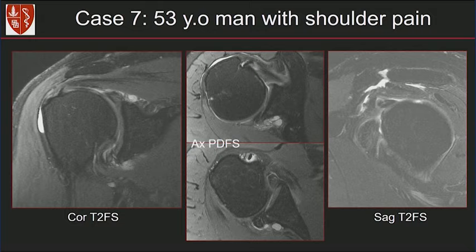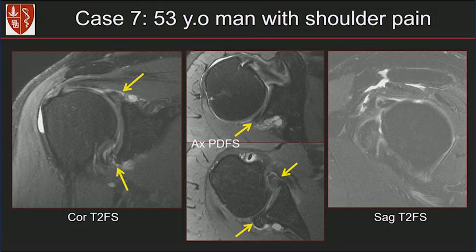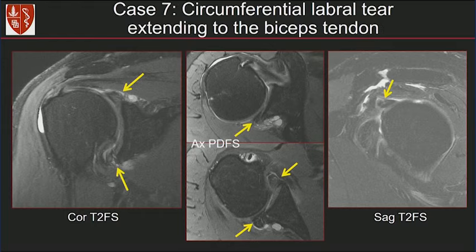This is a case of chronic shoulder pain. On the coronal T2 fat-suppressed image, we see abnormal signal in the superior and inferior labrum with paralabral cysts adjacent. The axial proton density fat-suppressed images show abnormal signal and morphology of the posterior and anterior labrum, with multiple paralabral cysts. The sagittal image shows extension of that abnormal signal into the biceps tendon. Our impression was a circumferential labral tear extending into the biceps tendon.